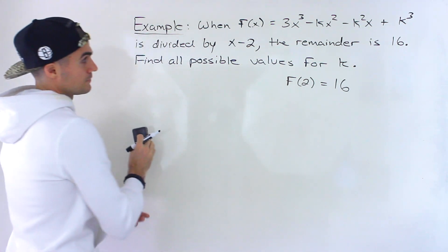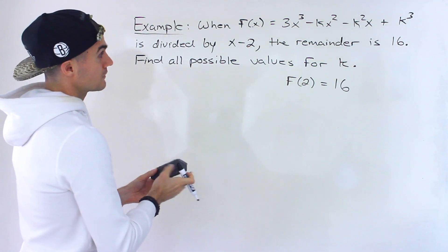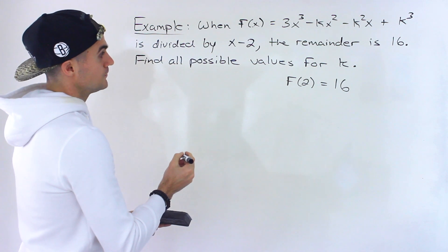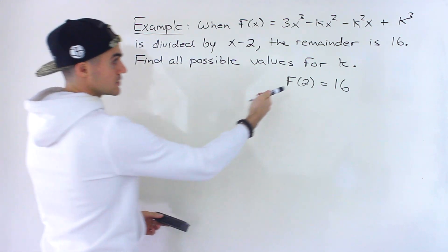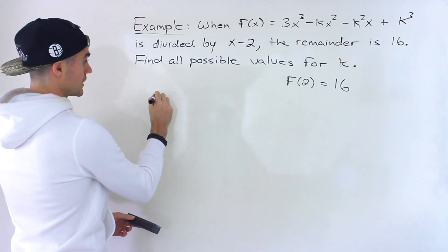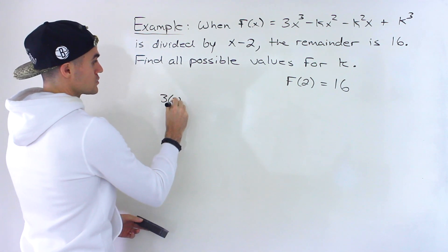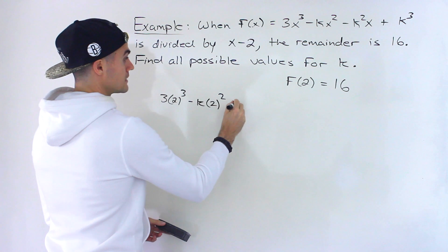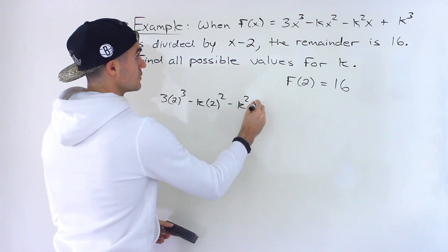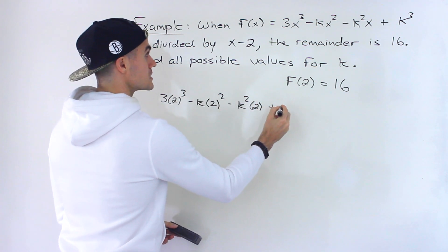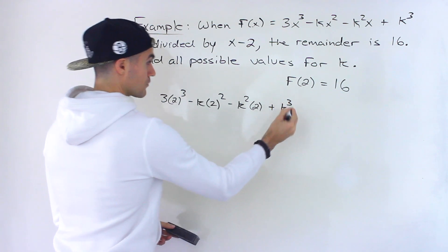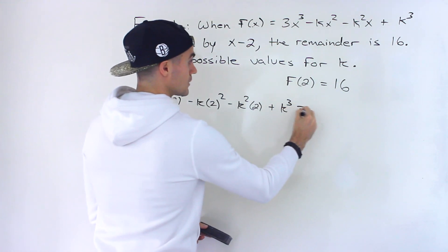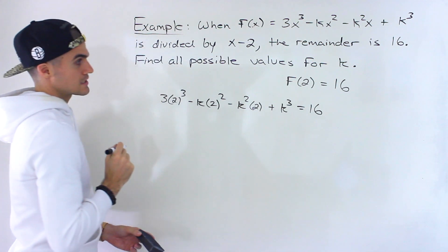Now we plug everything in and solve for k. First, plug in 2 for all x values: 3(2)³ - k(2)² - k²(2) + k³ = 16.